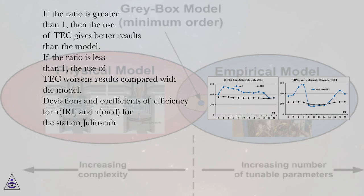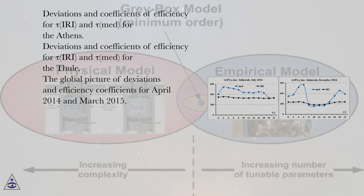Deviations and coefficients of efficiency for tau IRI and tau MED for the station Julius Rue. Deviations and coefficients of efficiency for tau IRI and tau MED for the Thule.